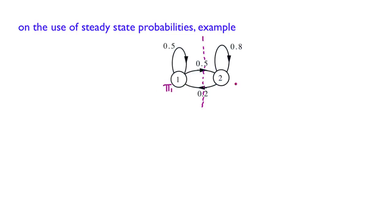So if you have pi 1 here and pi 2 here, what it means is pi 1 times 0.5, which represents the frequency of these kind of transitions, has to be equal to pi 2 times 0.2, which is to do this kind of transition, plus pi 1 plus pi 2, the normalization equation.